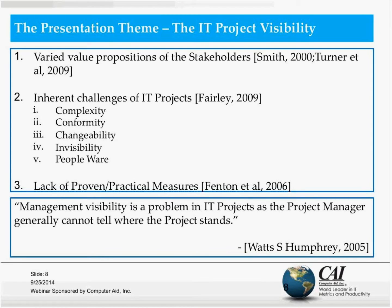The theme of the presentation today is about IT Project Visibility. Why are IT projects getting challenged? Those of you who might have seen the Standish report, or any other research reports, generally they say about one third to half the projects are successful, considering cost, quality, and time as the three main success parameters. But still, why are so many projects failing?